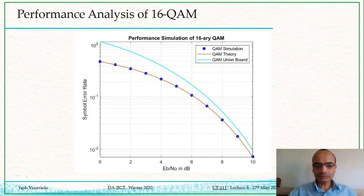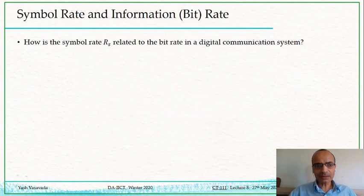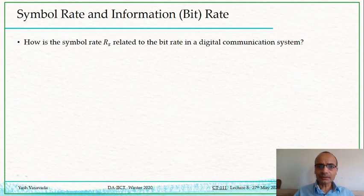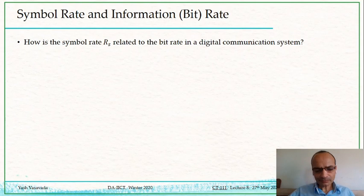Let us continue and cover one more topic from our simplified model. There is one thing that this simple model can convey very clearly: how to connect the symbol rate to the bit rate. These two are different quantities — bits are input to the modulator and symbols come out of the modulator. What is the relationship between bits per second and symbols per second?